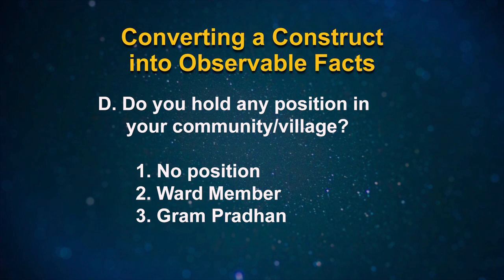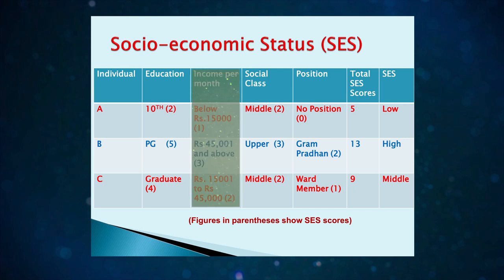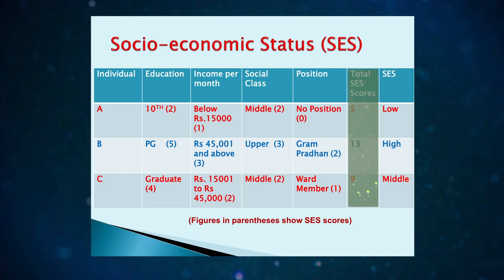This conceptualization helps the researcher to quantify the variables to examine their interrelationships. To do this, the responses to the questions are given scores or weightages. For example, socio-economic status can be understood in terms of individuals A, B, and C. Education-wise: tenth standard, PG, or graduation. Income per month: below 15,000 rupees, 45,000 rupees and above, or 15,000 to 45,000 rupees. Social class can be broadly divided into middle, upper, and lower. Then position: no position, gram pradhan, or ward member. The total SES scores could be 5, 13, and 9, and the socio-economic status could range from low, high, and middle.